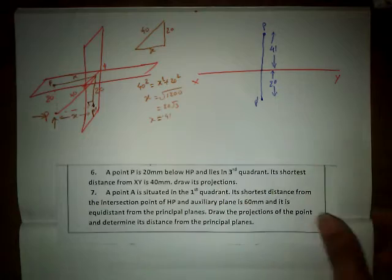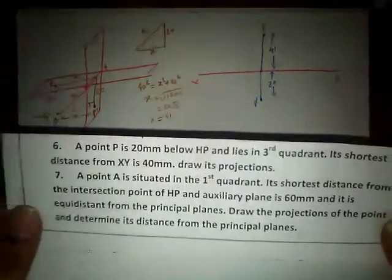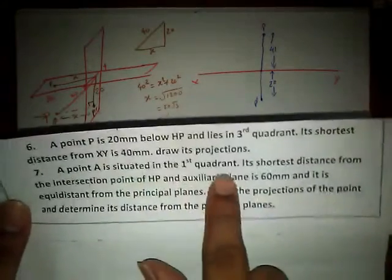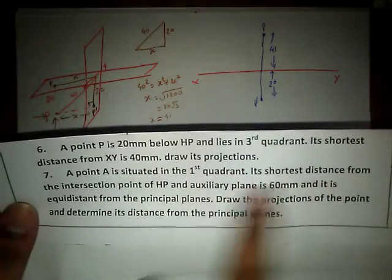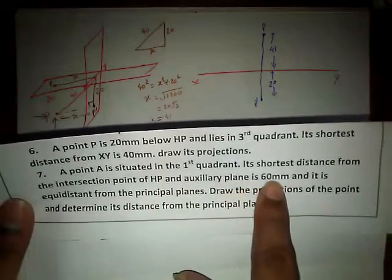A point capital A is situated in the first quadrant. The point is in the first quadrant and the shortest distance from the intersection point of HP and the auxiliary planes is 60 mm.